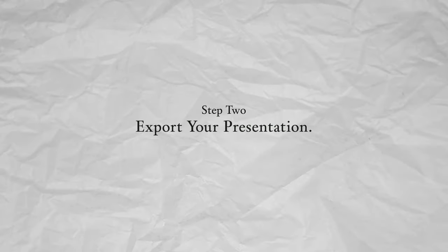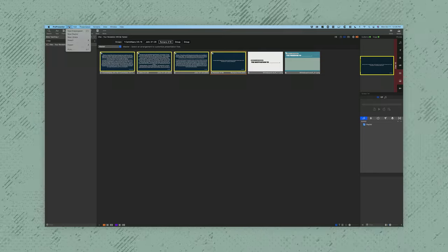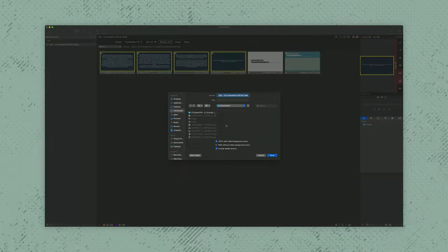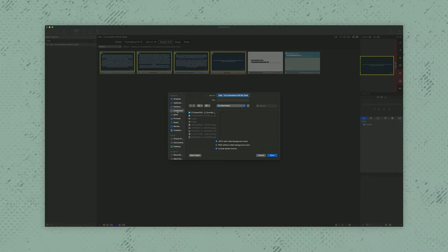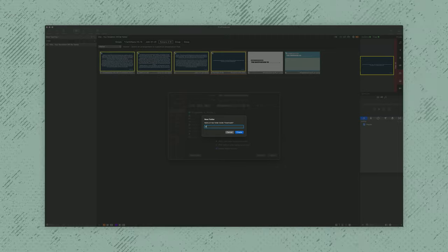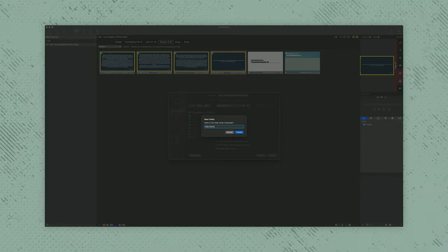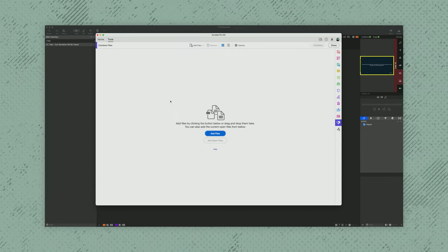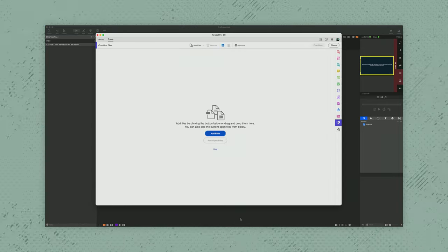Step 2: Export your presentation. Once you've completed your slides, export your presentation as a PDF. I use ProPresenter which doesn't have the ability to do this. If you're using software that also lacks this feature, you can export your slides as images and combine them into a PDF using Adobe Acrobat.